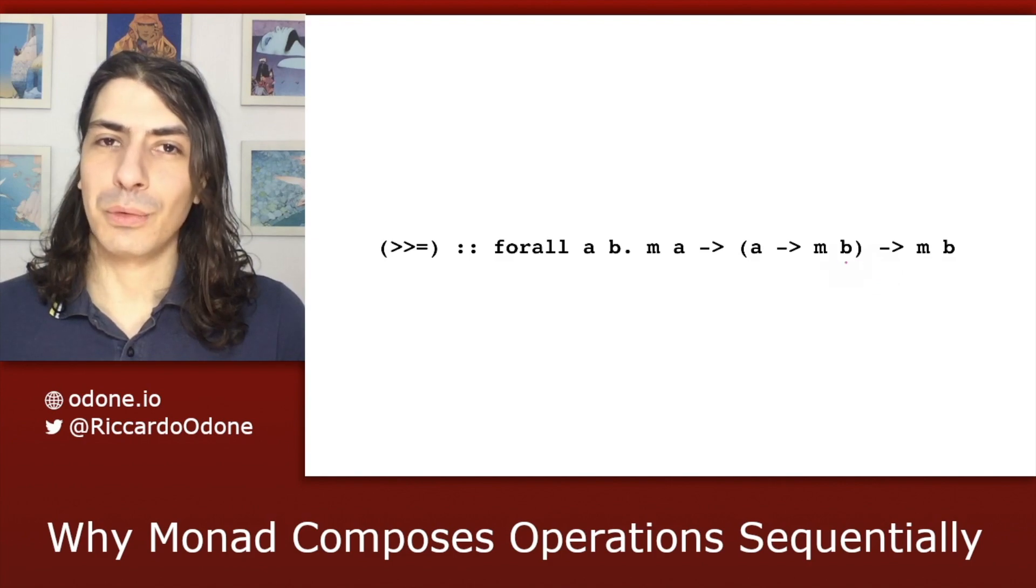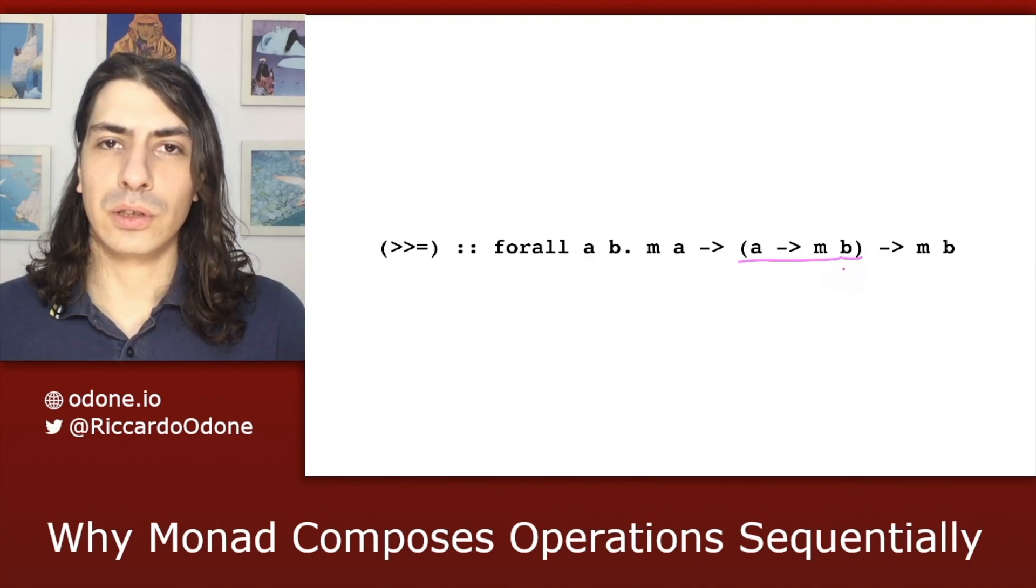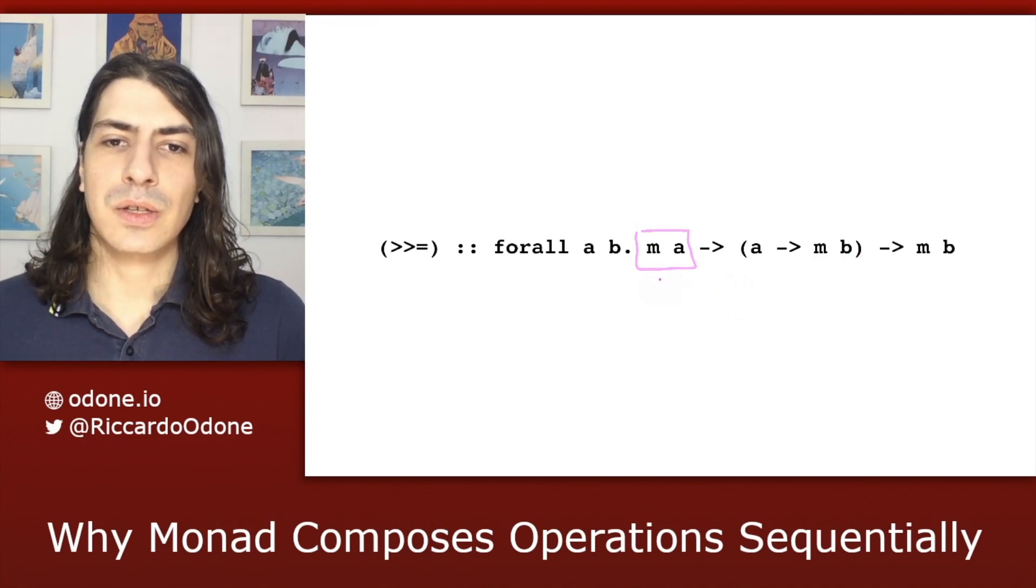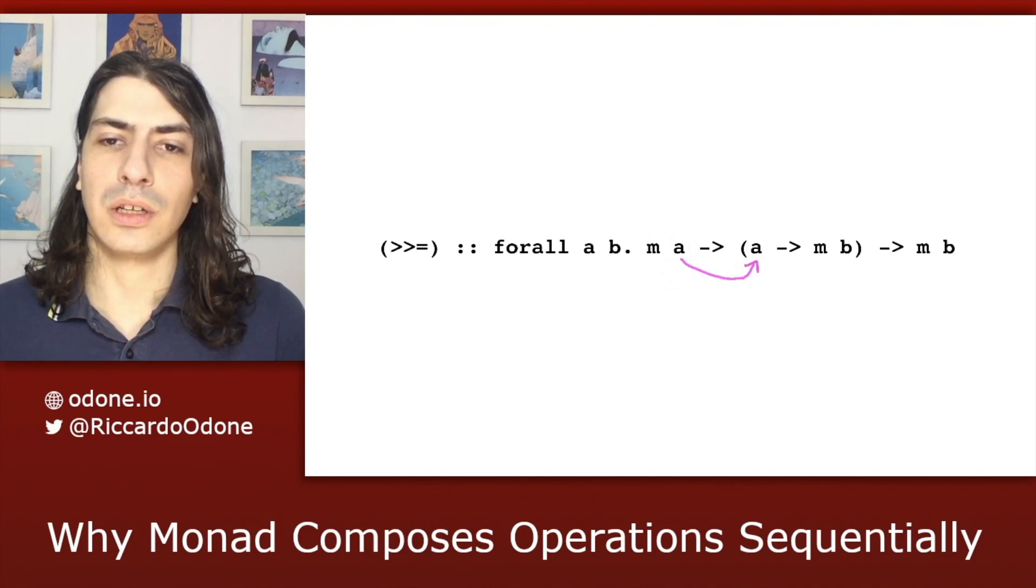The trick, which is the secret behind the sequencing, is that this step function can only be invoked if we have a value of type a. And if we consider this value here of type m of a as a context in which eventually a is produced, we can see how there's a sequencing in here happening.